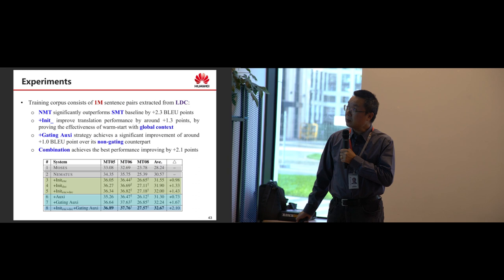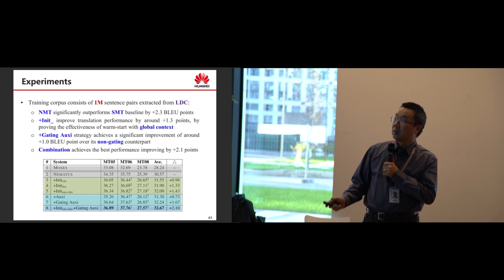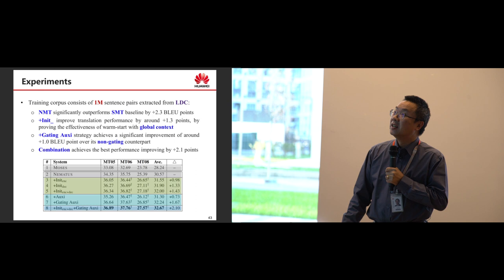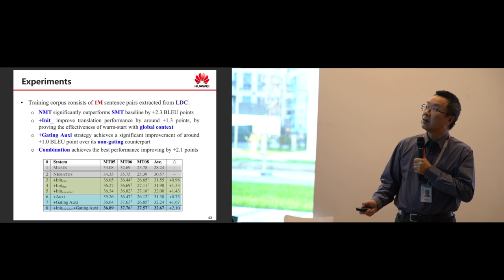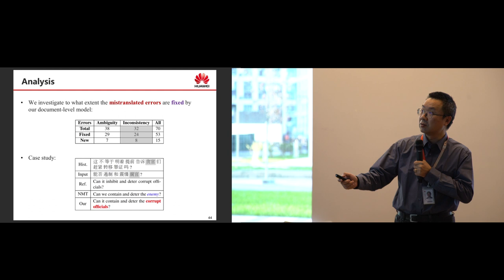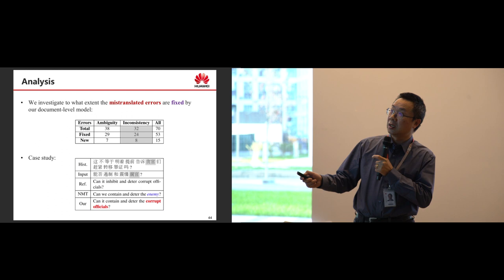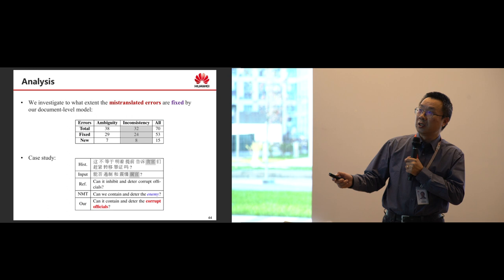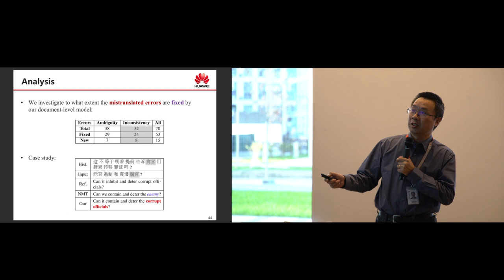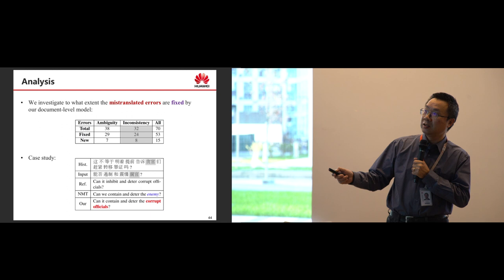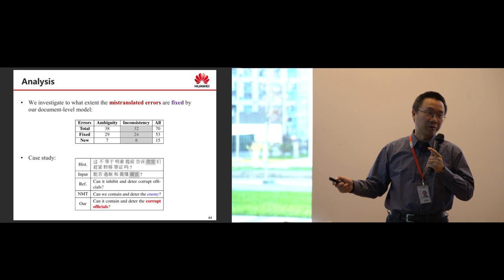This is the experiment. We use Nematus as the baseline system. Here is a case study: we distinguish two kinds of errors — ambiguity errors and inconsistency errors. Our model fixed 29 ambiguity errors but generated 7 new ones. We fixed 24 inconsistency errors and generated 8 new ones. Overall, we got some improvement.